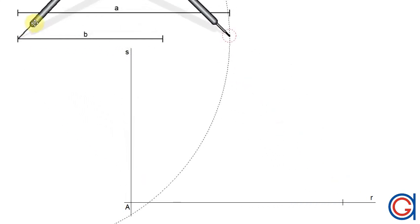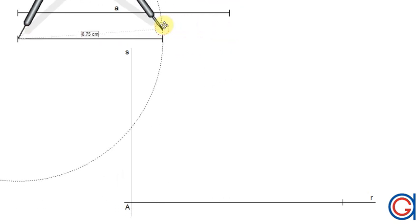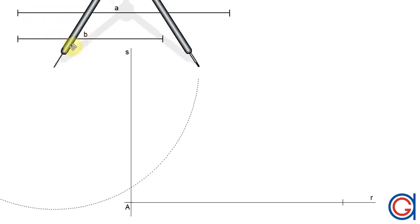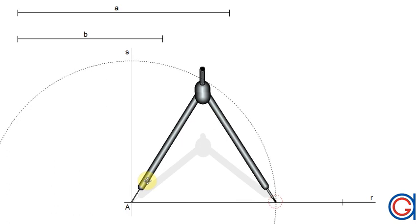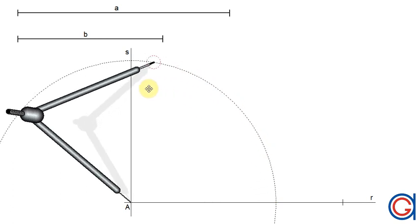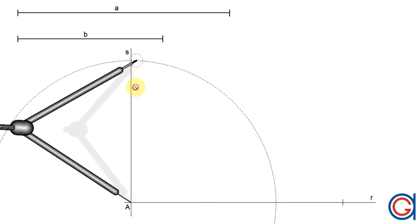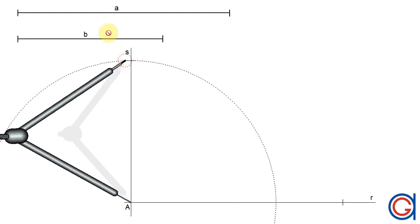So setting our compass to the length of the smaller side B, we are going to transport this onto the vertical line S. So setting it to the length B and setting our compass on vertex A, we scribe an arc until it cuts the vertical line S at our fourth vertex which will be D.